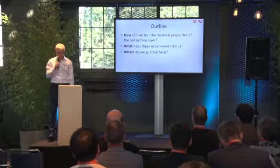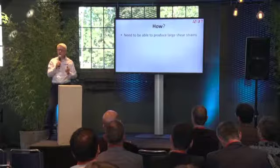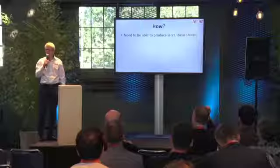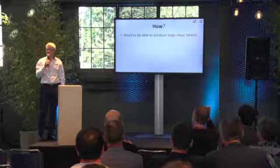Let's start with how, because we need to produce the large shear strains that we have in the top surface of the rail. But it's not easy to just take material out of the rail, because due to the large gradients we can't just take out the test specimen and test it in many directions. We might be able to test in one direction, but as many of you know, that's not sufficient to understand how the material behaves.